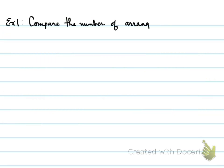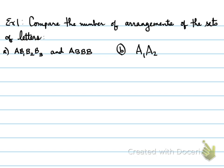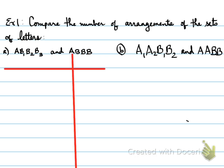So let's look at a couple of examples. Example 1: Compare the number of arrangements of the sets of letters A, B1, B2, B3 and A, BBB. Also A1, A2, B1, B2 and AABB. So looking at the first one, let's look at AB1B2B3 and ABBB.